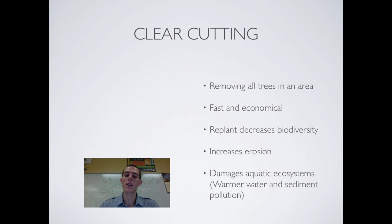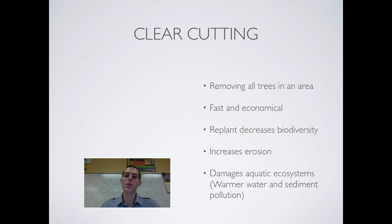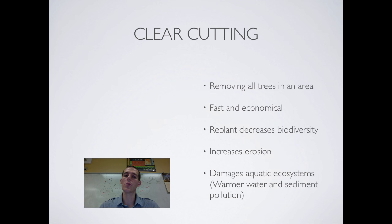Other problems with clear-cutting include increased erosion and damage to aquatic ecosystems. Removing all the trees means rivers and lakes are no longer shaded, so water temperatures rise, the chemistry of the water changes, and animals adapted to cooler temperatures are harmed. Additionally, the silt and sediment that erodes off the land can wash into streams, lakes, and rivers, adding significant pollution to the water.